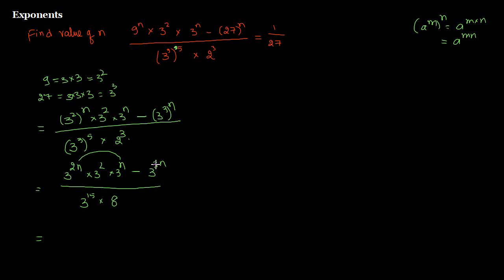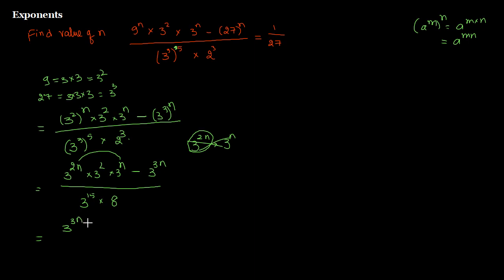The reason I want 3n is so I can take it as a common factor. If not, I'd need to split: 3 to the power 3n can also be written as 3 to the power 2n times 3 to the power n. Adding those together gives 3 to the power 3n, plus 3 squared as is, minus 3 to the power 3n.